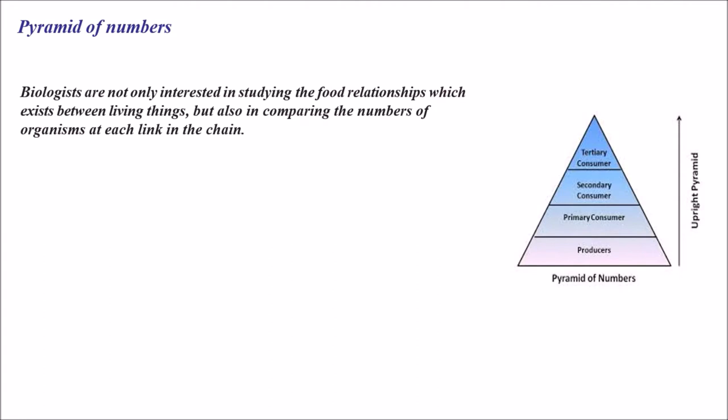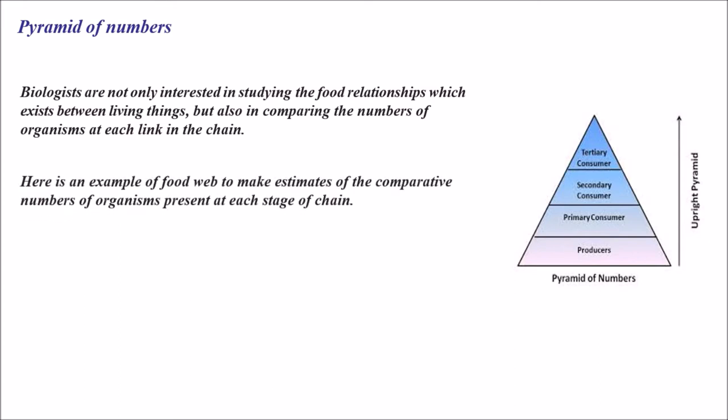Biologists are not only interested in studying the food relationships which exist between living things, but also in comparing the numbers of organisms at each link in the chain. So when we talk about pyramid of number, pyramid of biomass, a food chain or a food pyramid, there is a relationship between living organisms at different levels. Biologists are interested in comparing the number of organisms present at each level.